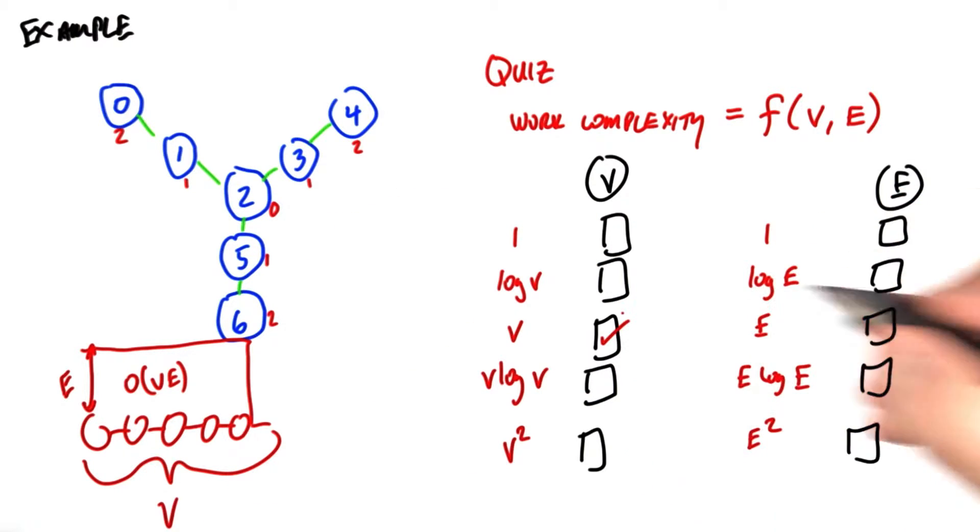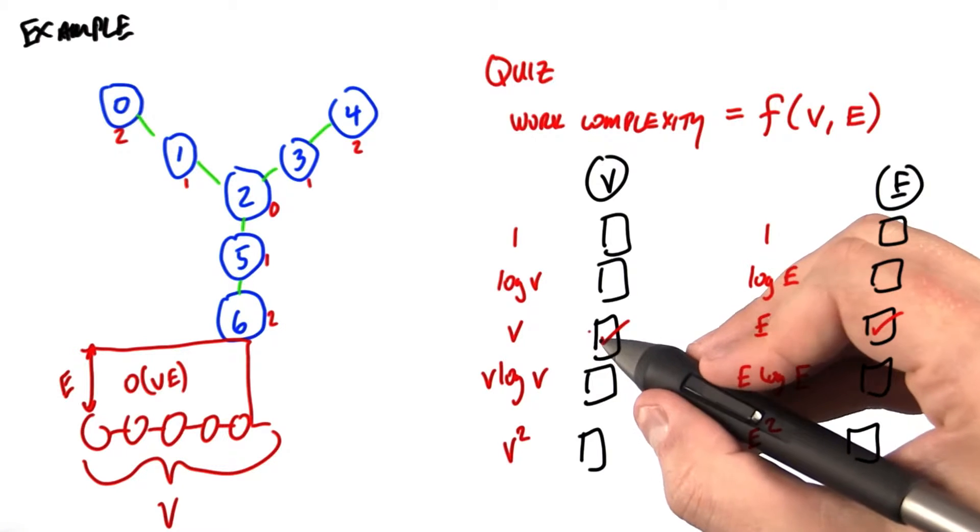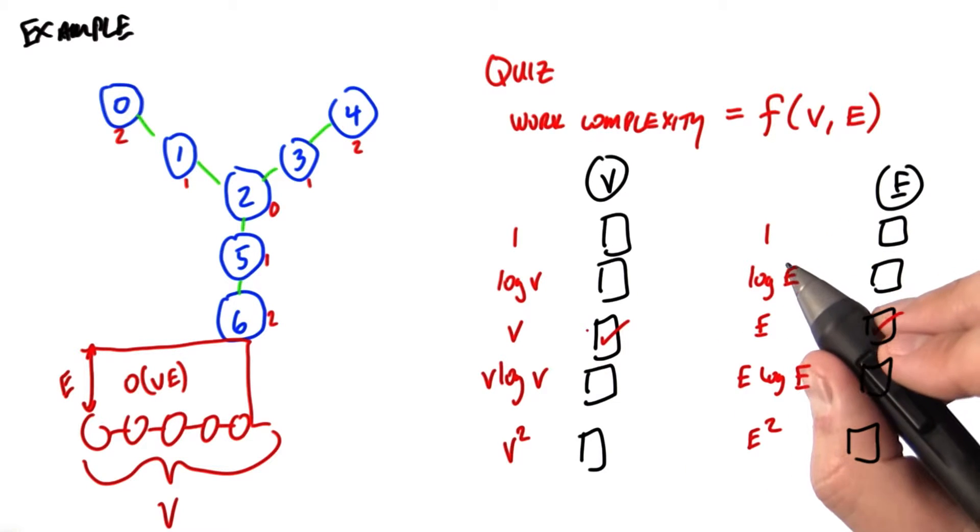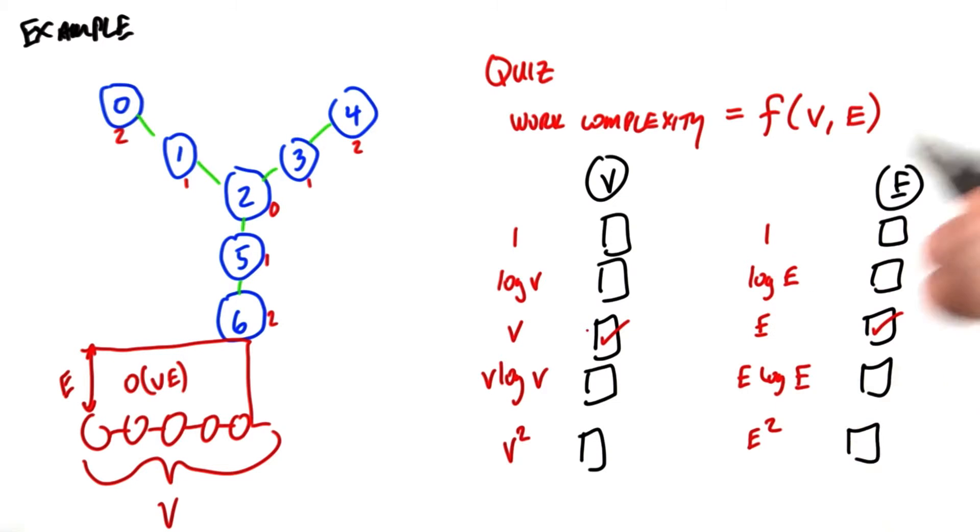We know it's at least on the order of v, and at least on the order of e. Probably in any reasonable graph, there's going to be more edges than vertices. Otherwise, it's not a very interesting graph. And if that's the case, we know that the overall work complexity is going to be at least order of e squared.